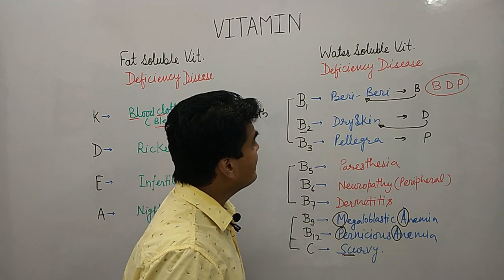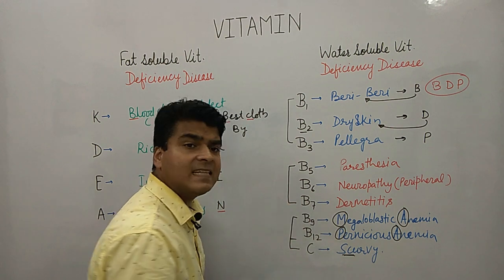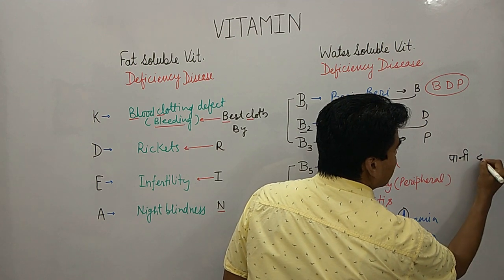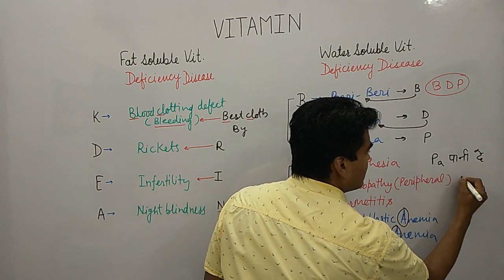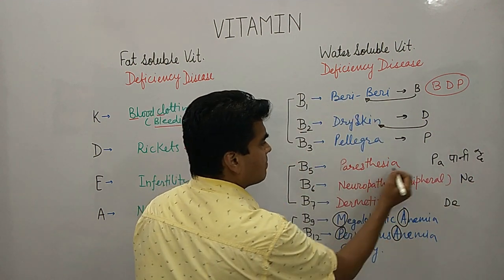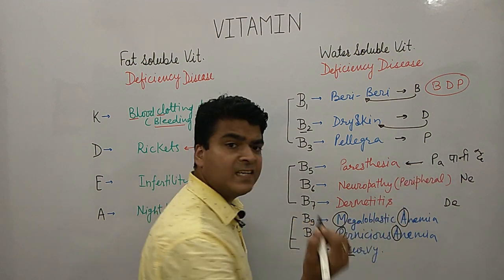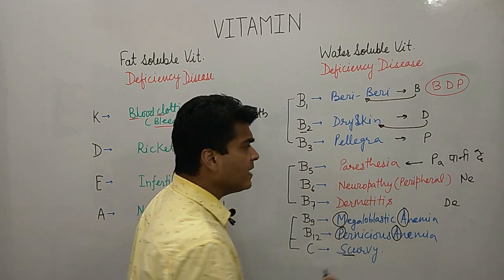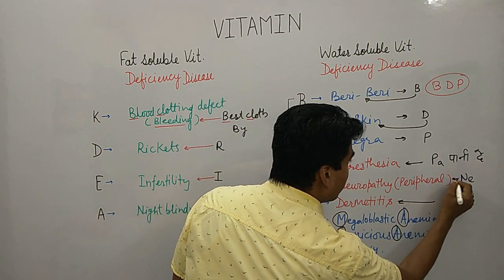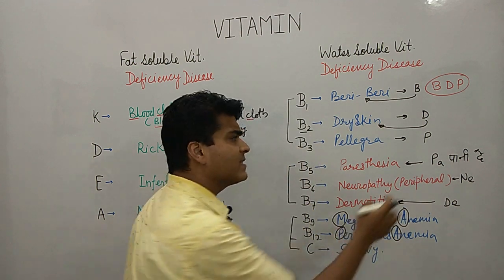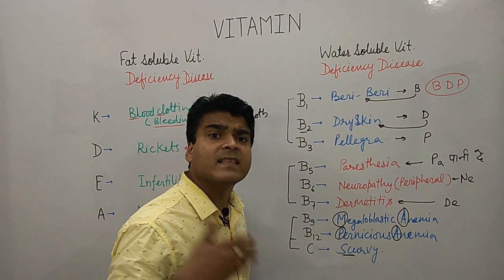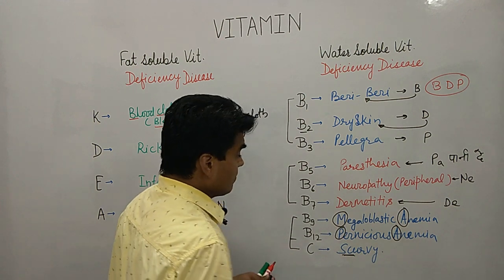For vitamins B5, B6, and B7, remember 'Pani they.' Pani means Pa for paresthesia, Ni for neuropathic pain — basically peripheral neuropathy — and they means dermatitis. So by this trick, after BDP, people say 'Pani they,' helping you remember all three deficiency disorders for B5, B6, and B7.